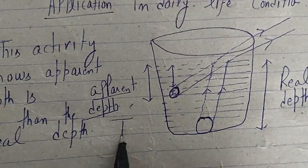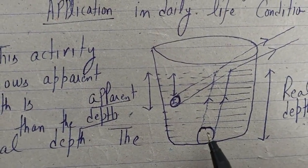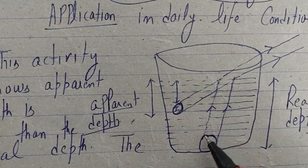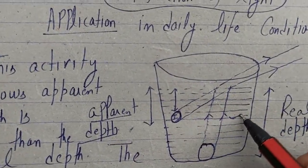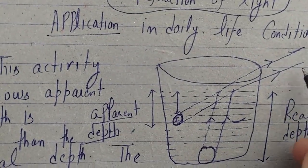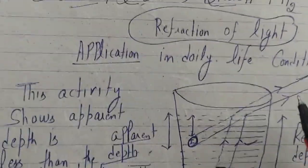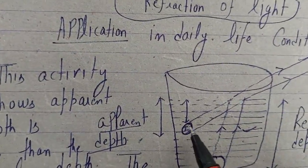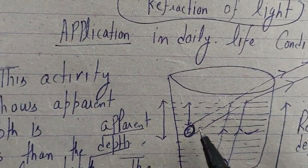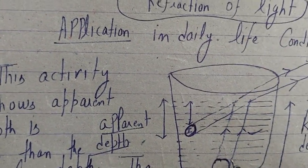The rays of light traveling from the coin travel through water into the air — from denser medium to rarer medium — so they will bend away from the normal due to refraction of light. Due to refraction, the appearing position of the coin will appear at a higher height as compared to the actual position of the coin.